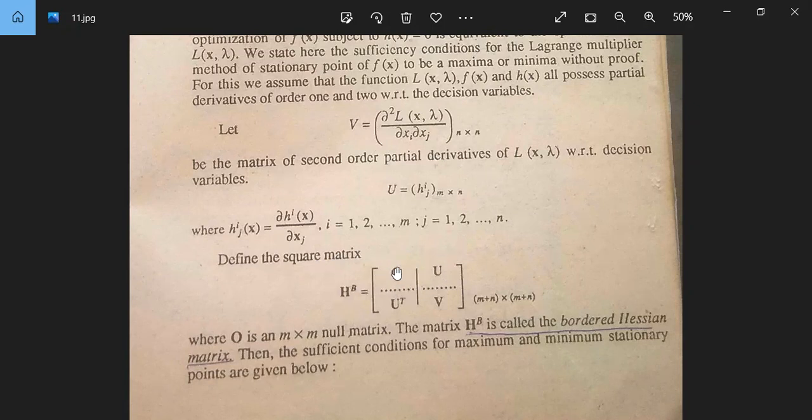Define the square matrix H^b equal to: O is the null matrix M by M type, M is number of constants, so it is M by M type. This is U, M by n type matrix, and this is U transpose. And this is V, N by N matrix. And the whole matrix is M plus N by M plus N type matrix. Where O is an M by M null matrix. The matrix H^b is called the bordered Hessian matrix. Then the sufficient conditions for maximum and minimum stationary points are given below.